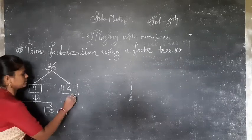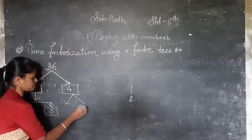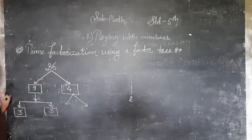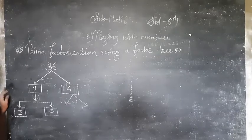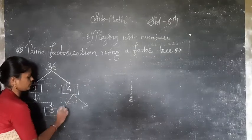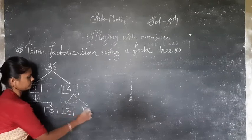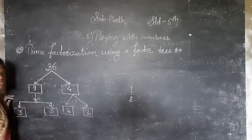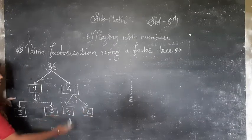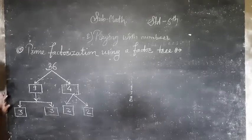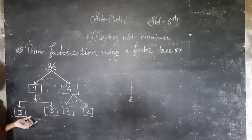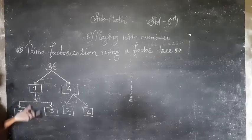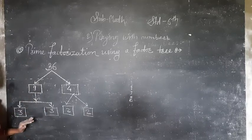Now we have the 4. So you have to find the factors of 4 also. Factors of 4 are 1, 2, and 4. So here you can see 2 times 2 are factors, which is also a prime number. So here your factorization is complete. This is the complete factorization using the factor tree.